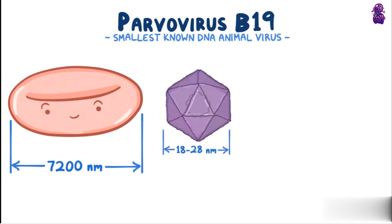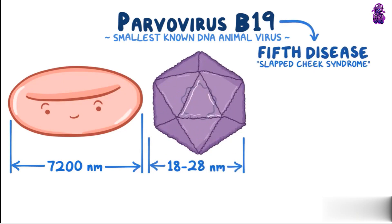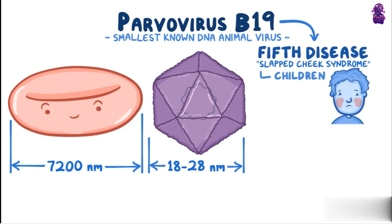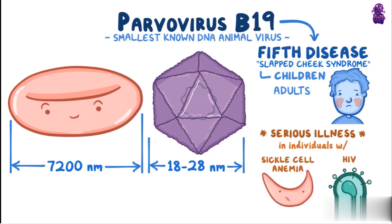While it's mostly known for causing fifth disease, or slapped cheek syndrome, in children, Parvovirus B19 can also affect adults and it can cause serious illness in individuals with pre-existing conditions like sickle cell anemia and HIV.